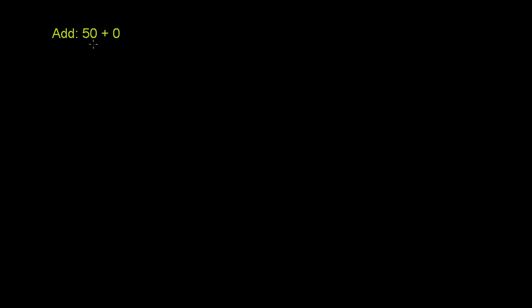We're asked to add 50 plus 0. 0 is nothing. So you can imagine that we're starting off with 50 of something, and if we add nothing to that 50, we're still going to have 50 of that something. If I have 3 of something and I added nothing, I'm still going to have 3.